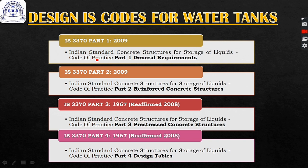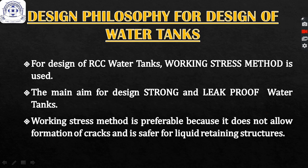IS 3370 is the code of practice for concrete structures for storage of liquids. Part 1 is for general requirements, Part 2 is for RCC structures only, Part 3 is for pre-stressed concrete structures and is not required in this topic, and Part 4 contains design tables. We will be using Parts 1, 2, and 4 in the coming slides.